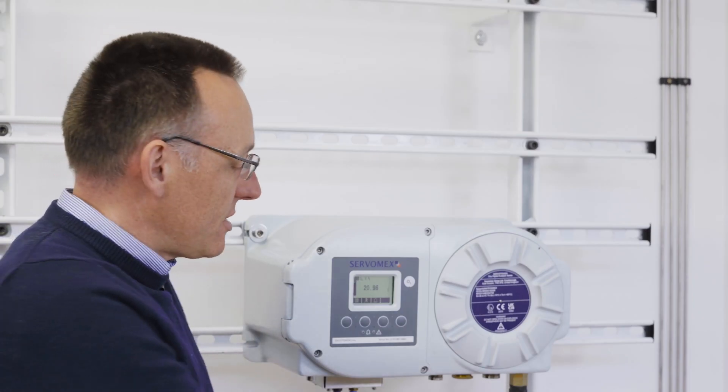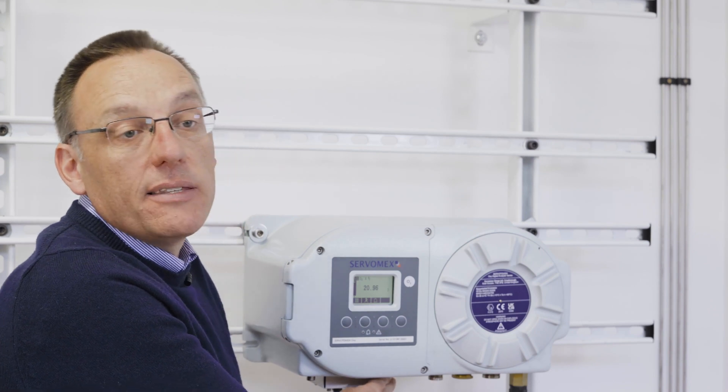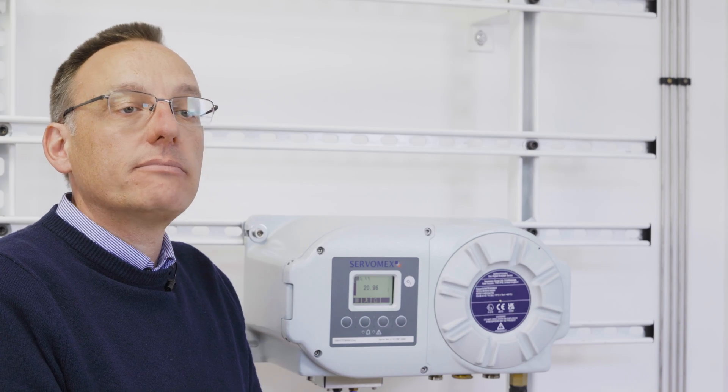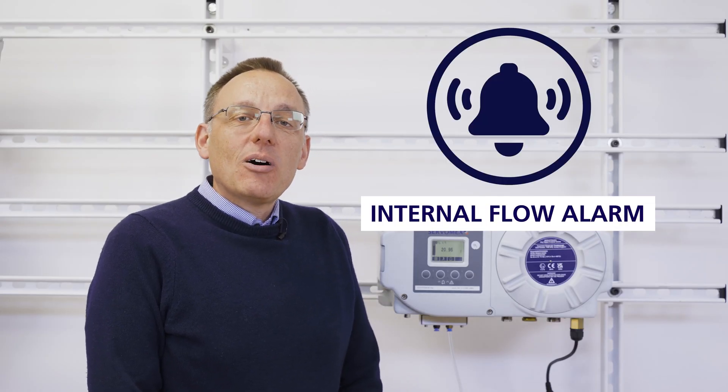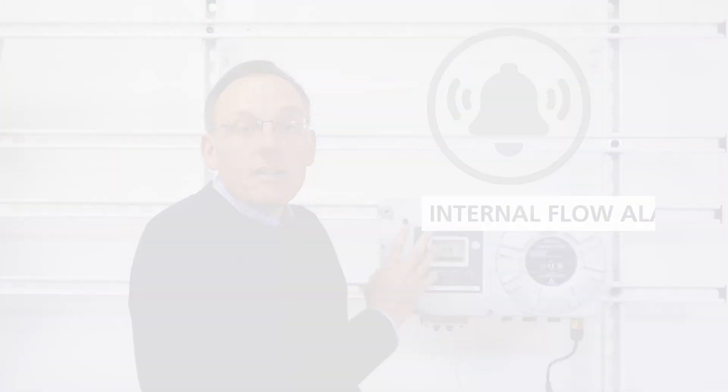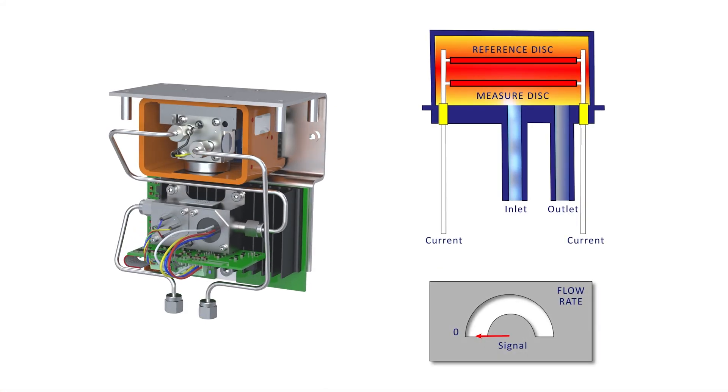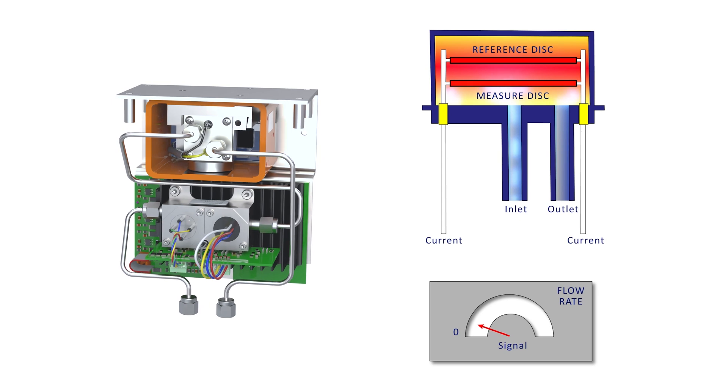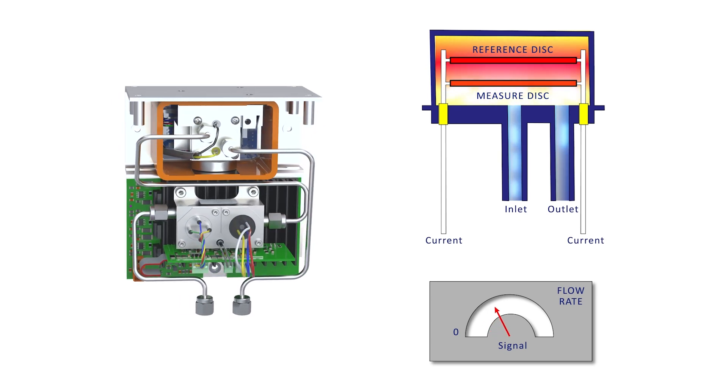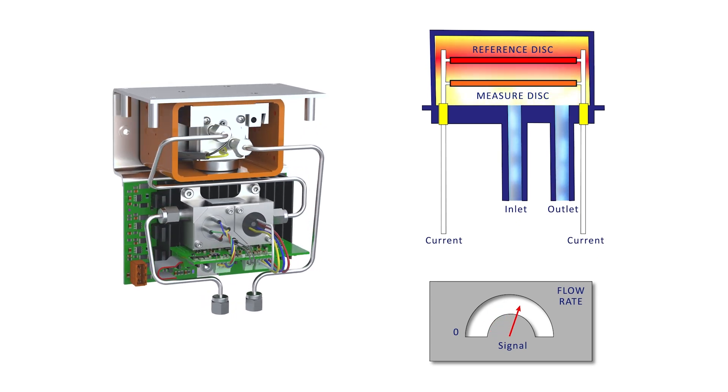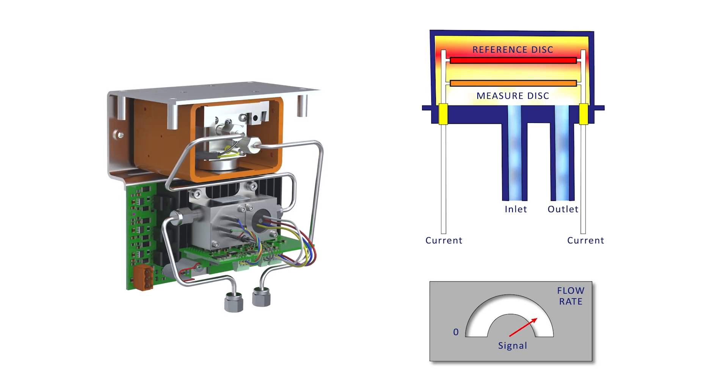Sample flow rate options to the sample gas inlet port are either 200 or 1000 millilitres per minute. There's also the option for an internal sample flow alarm within this compartment. The flow alarm uses a post-measurement Servomex flow cube sensor to validate that the sample has flowed through the paramagnetic sensor itself.